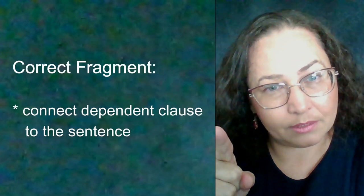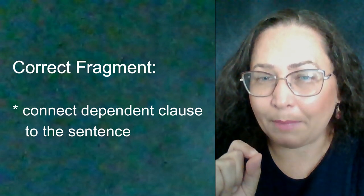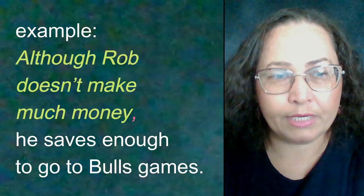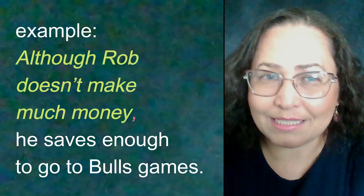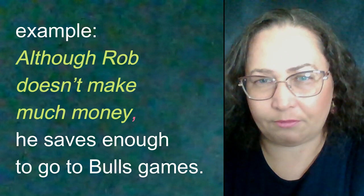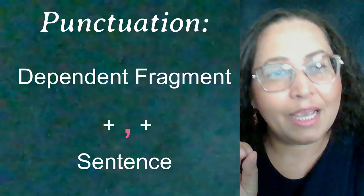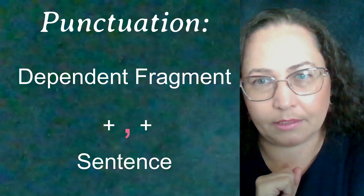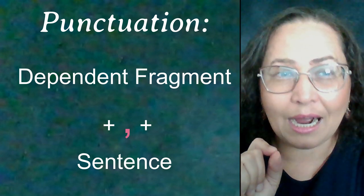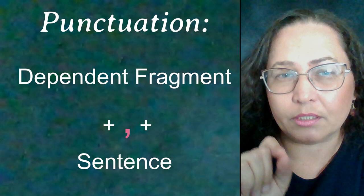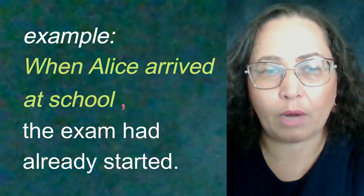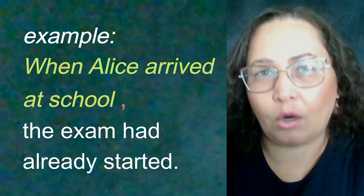To correct the dependent clause fragment, connect the dependent clause to the sentence that finishes the thought. For example: 'Although Bob doesn't make much money, he saves enough to go to college.' Pay attention to punctuation: if the dependent clause fragment appears at the beginning of the sentence, place a comma after the fragment to attach it to the sentence. For example: 'When Alice arrived at school, the exam had already started.'